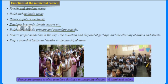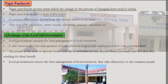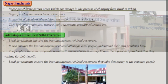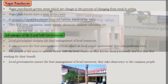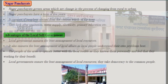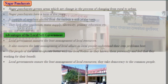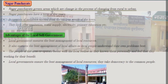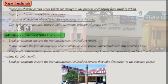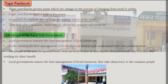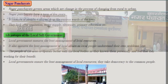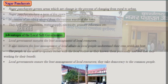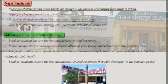In this image we see people queued to elect members during a municipality election. Nagar Panchayats govern areas that are transitioning from rural to urban. They have a term of five years and consist of members elected from the various wards of the town. They look after sanitation, water supply, electricity, primary education, and other local services.